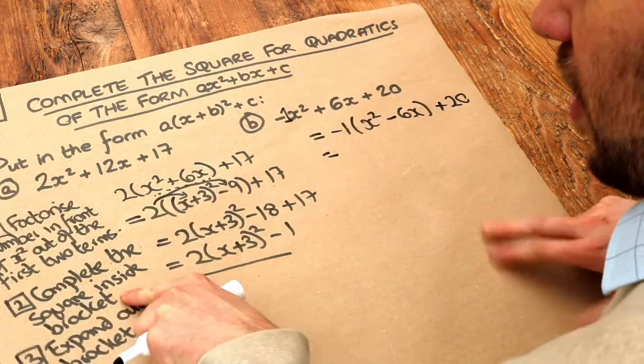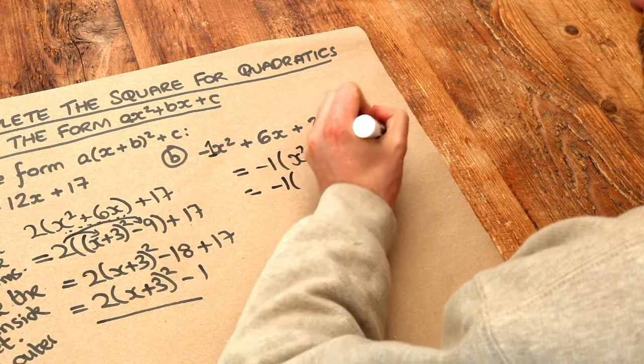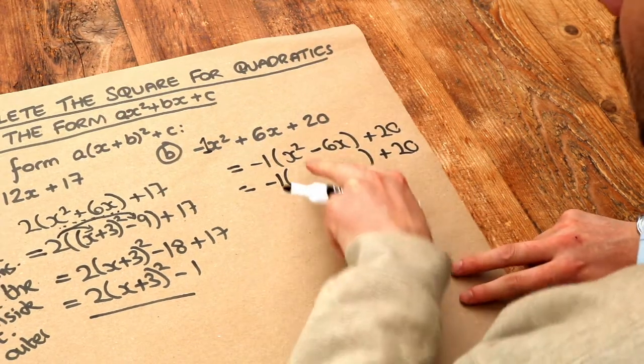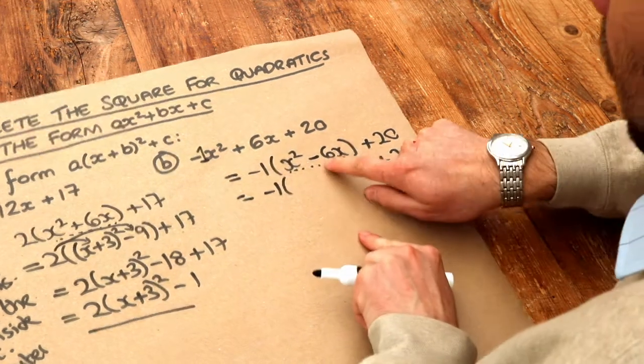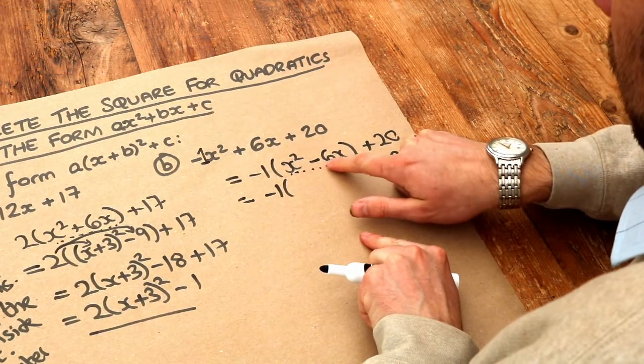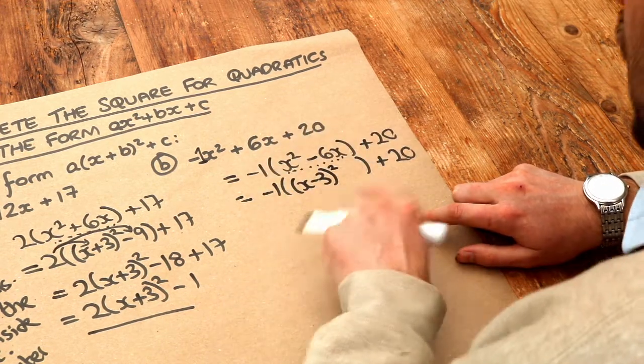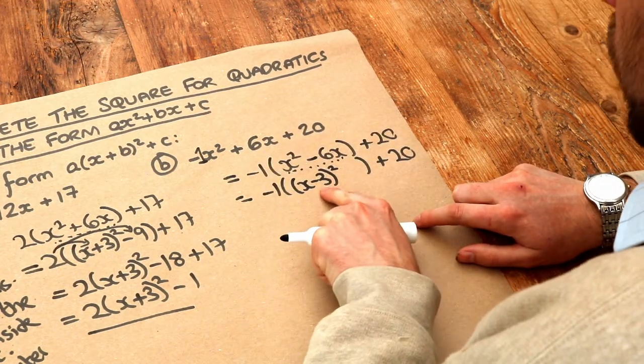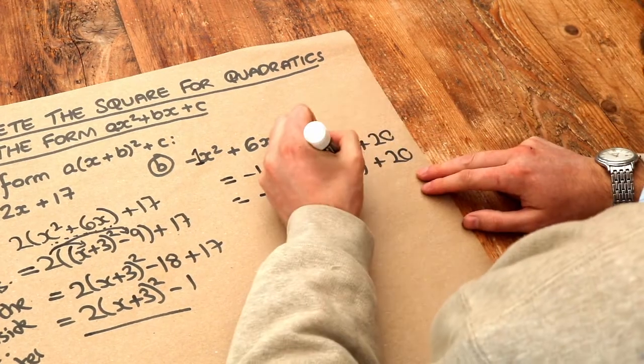Step two is to complete the square inside the bracket. So if we just copy what we've got outside of this bracket, and then we're going to complete the square inside here, this thing here. So remember, we halve the number in front of the x. So the minus 6 to give us x minus 3 squared. And then whatever that is squared, we throw it away. So minus 3 squared is positive 9. So we throw away the 9.